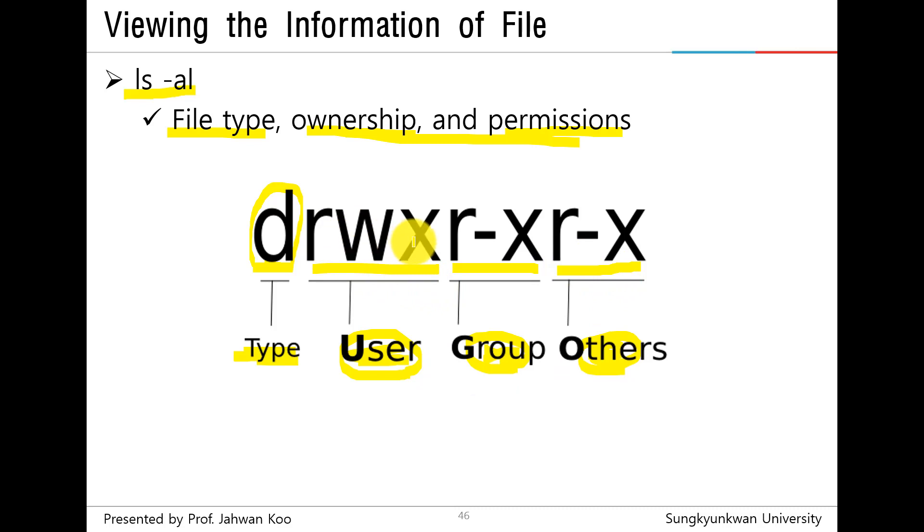The symbol rwx means file permission bit. R means read permission - it allows the contents of the file to be read. W means write permission - it allows modification of the contents of the file. X means execute permission - it allows execution of the file.